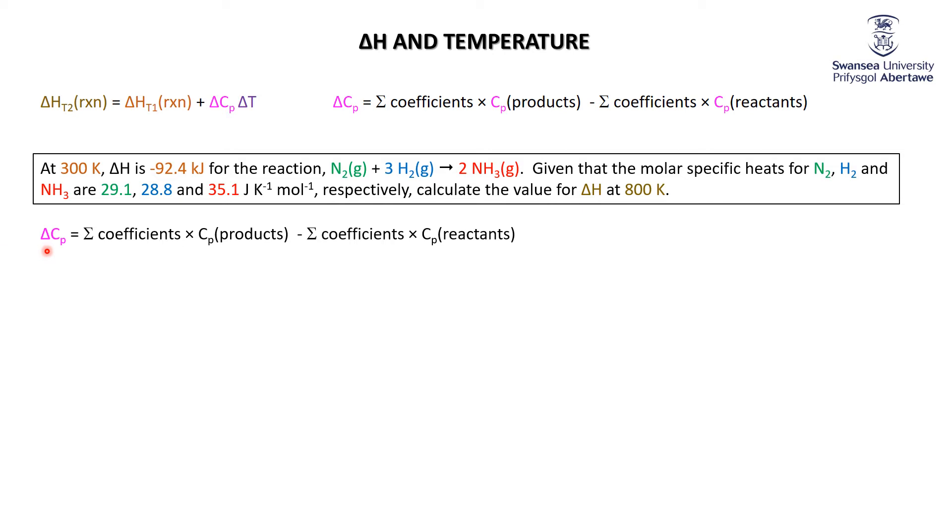For the products, we got 2NH3, so it's two times the CP of NH3. For the reactants, we got an N2 and 3H2, so it's the CP of N2 plus three times the CP of H2.